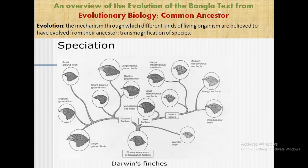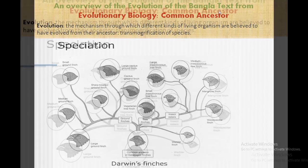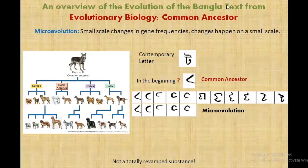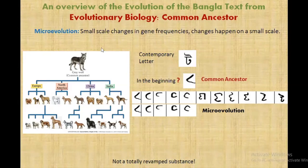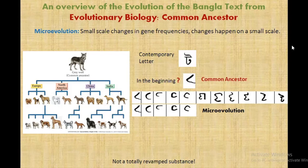You can see Darwin's finches. In evolution we can break this down into two vital pairs. The first is microevolution — small scale changes in gene frequencies. You can just remember it as changes happening on a small scale.